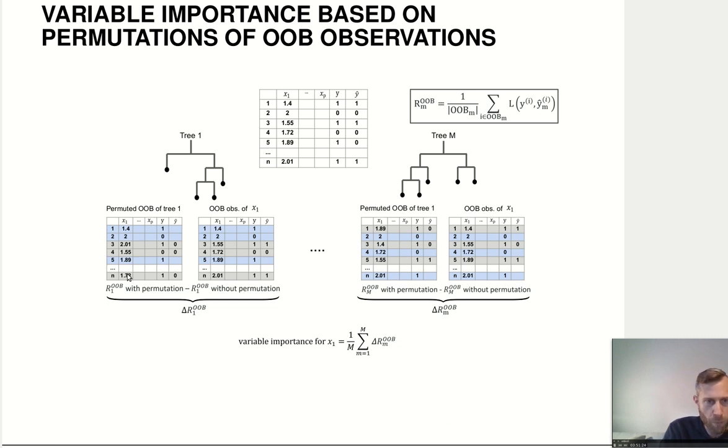And now, I want to know how important is this variable x1 for generating these predictions. So what I do is I permute the values of x1. So you see I change around the order of them. All the other columns in here, I don't change. I only permute the values in this one column compared to the original dataset. So this is basically here, I have destroyed the association between x1 and y.